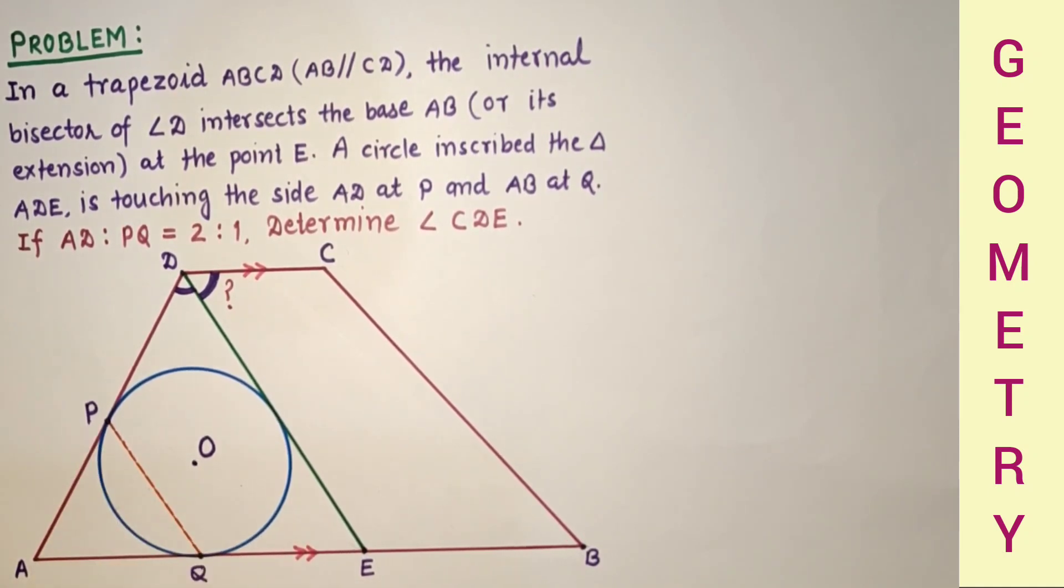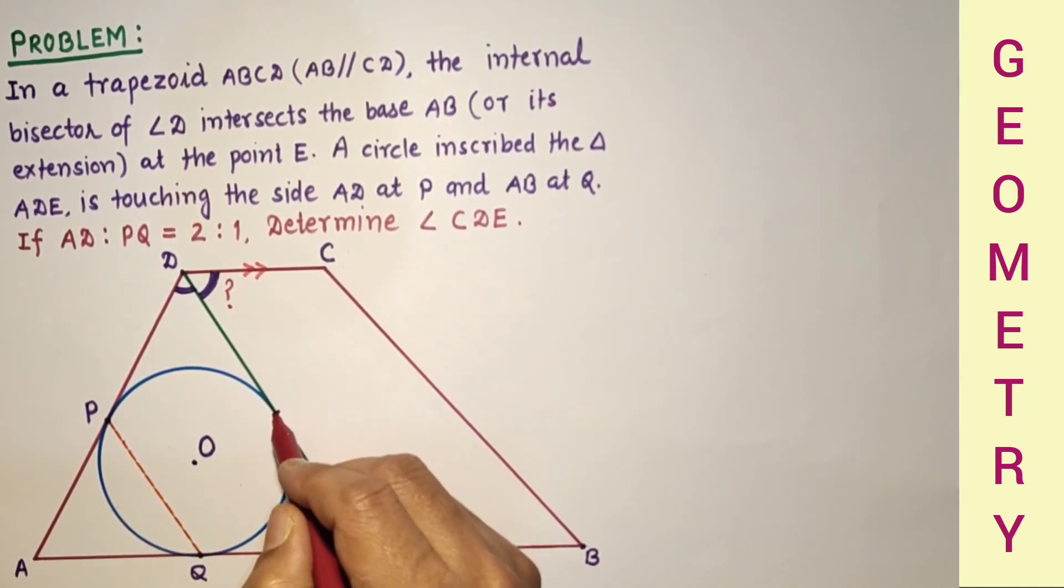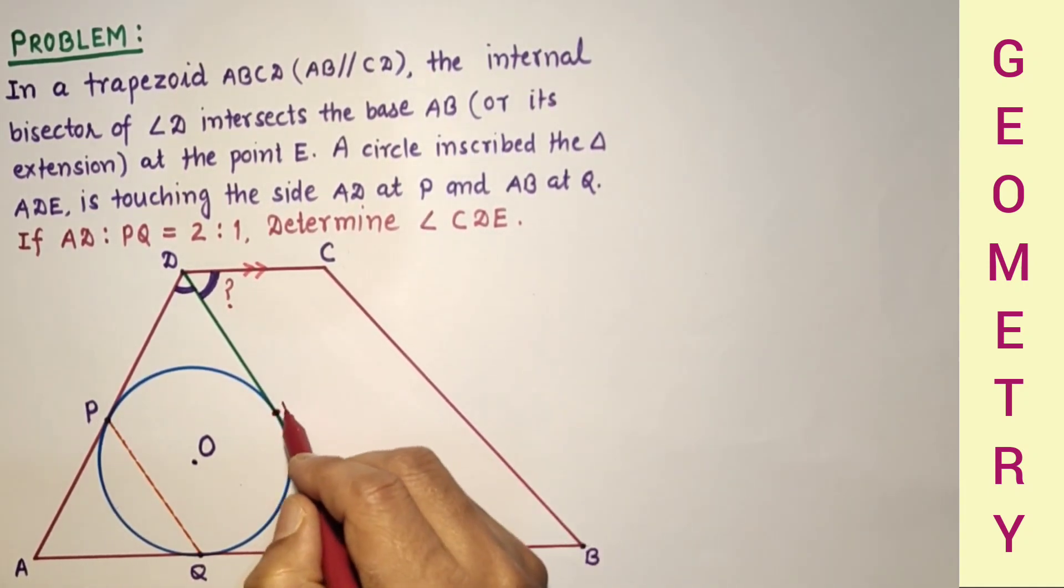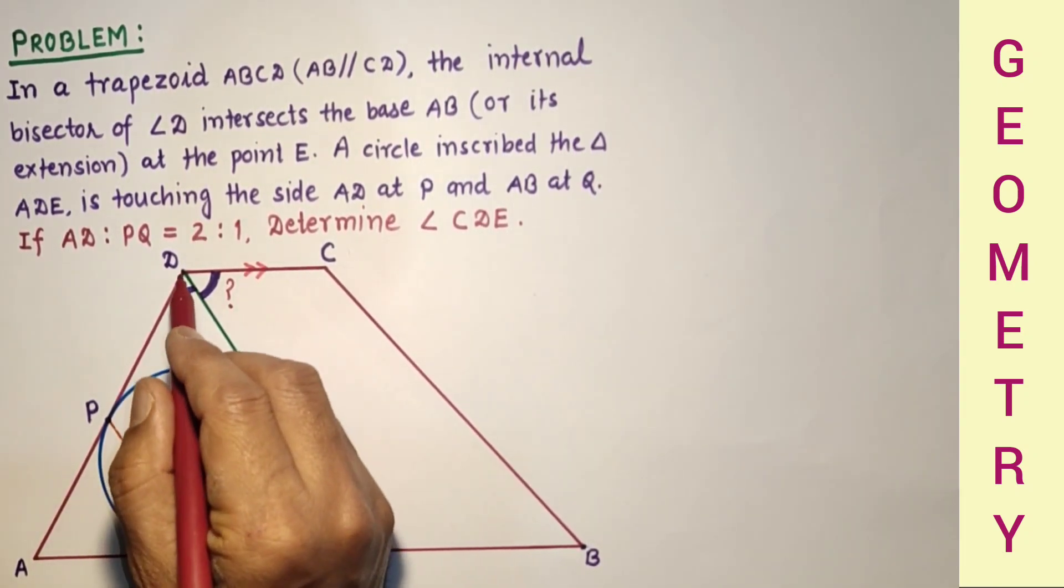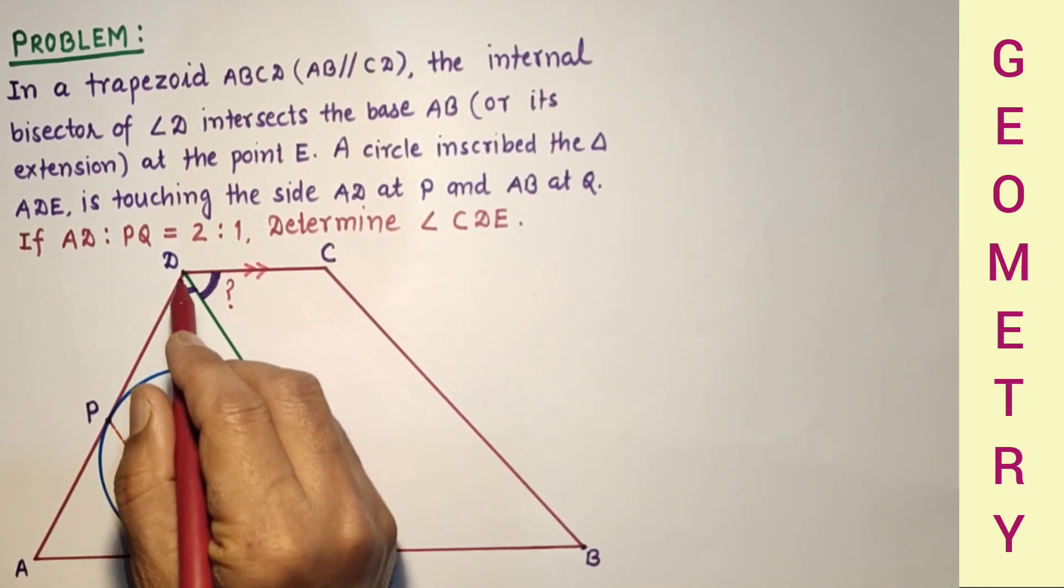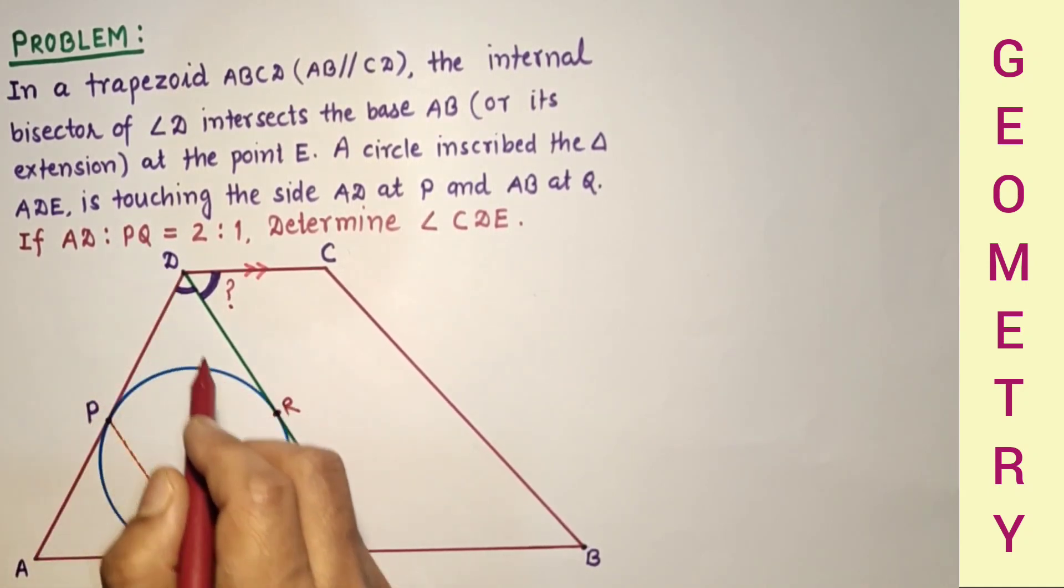So AP is equal to AQ and EQ is equal to this. Let us suppose this point is R. The exterior point is E, so tangent EQ is equal to tangent ER. And in the same way this point is exterior and tangent DP is equal to DR.